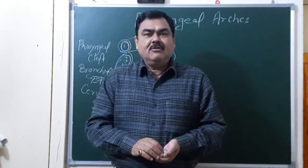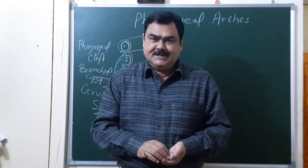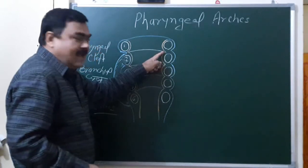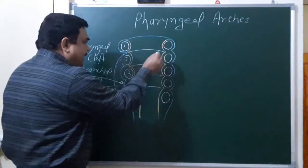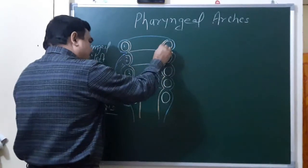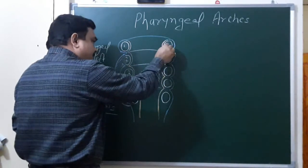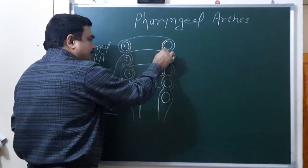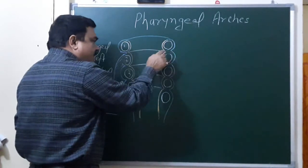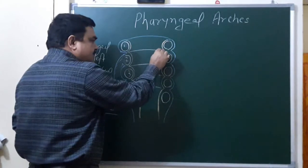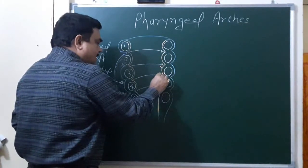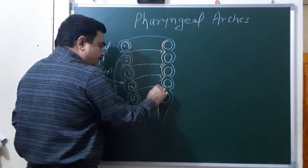Now we will discuss about the pharyngeal pouches. The endodermal lining between two adjacent mesodermal thickenings forms the pouch. There are four pouches: first, second, third, and fourth pouch.